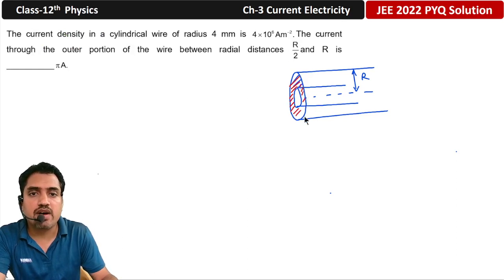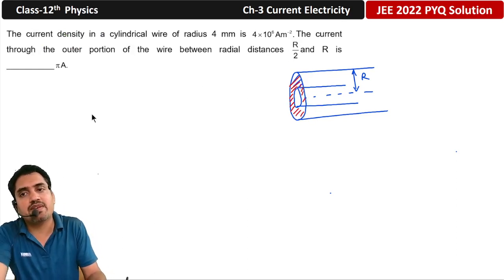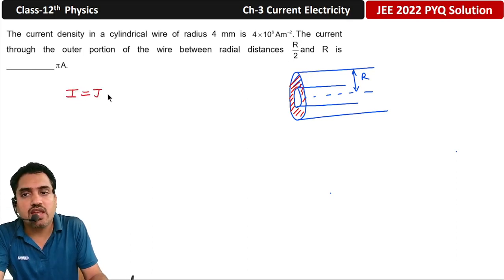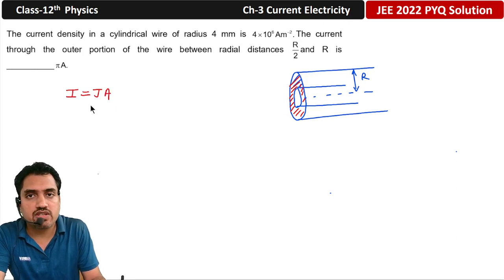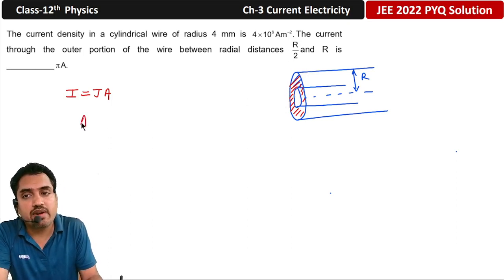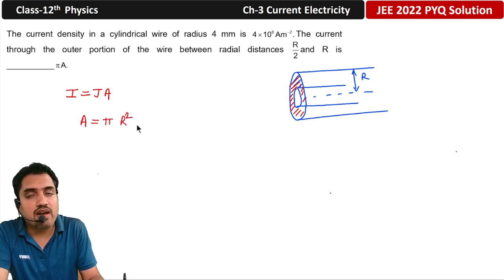We need to find how much current will pass through this outer portion. We have a simple concept: current I is equal to J into area of cross-section. So this area of cross-section is what we need to find — it is the shaded annular area, which is the whole area minus the inner area.